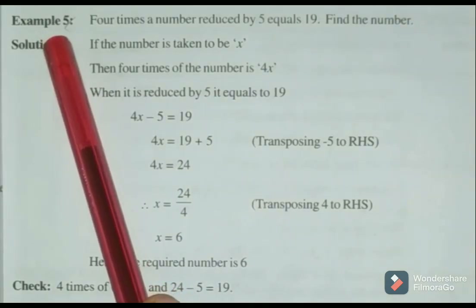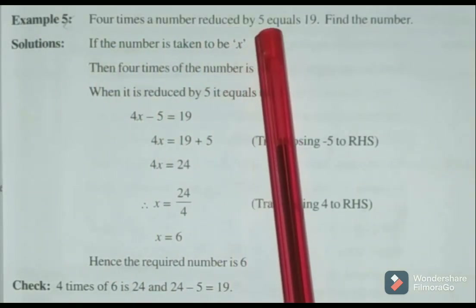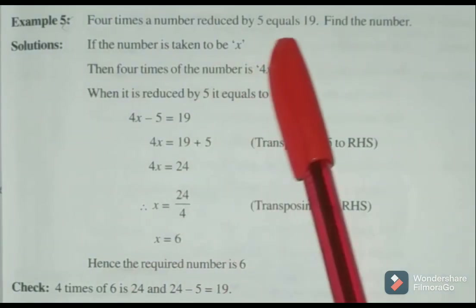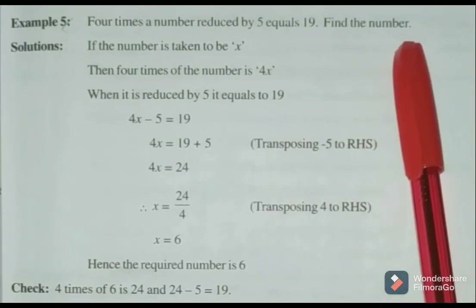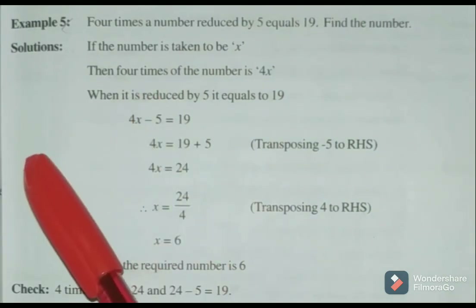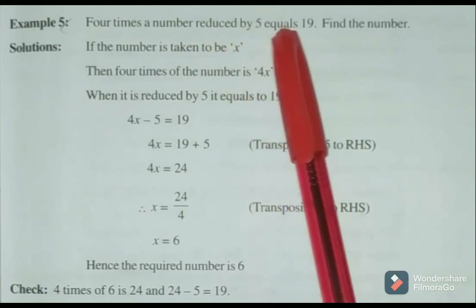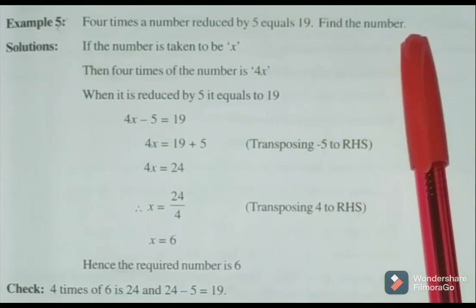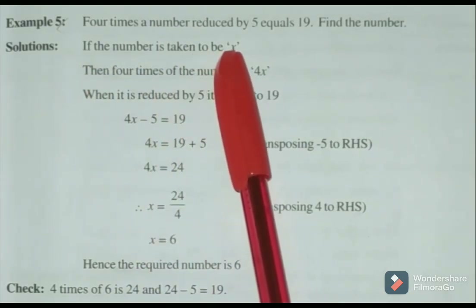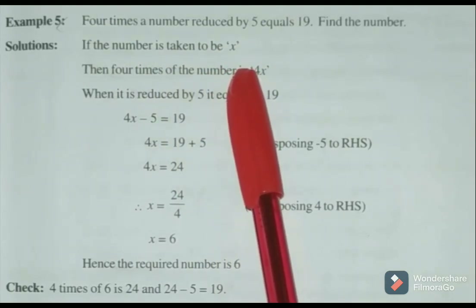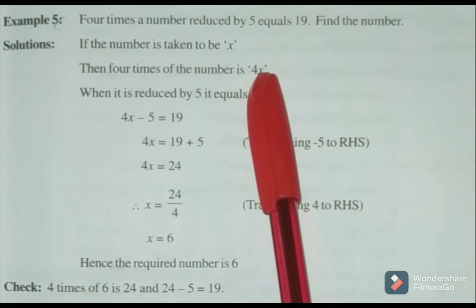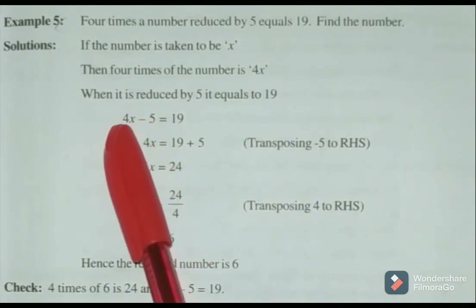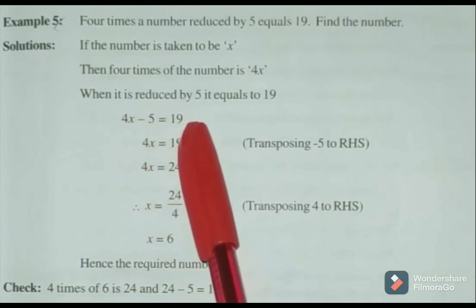Next example: 4 times a number reduced by 5 equals 19. Find the number. Let the number be X. 4 times the number is 4X. It is reduced by 5, and reduced means subtracted, so 4X minus 5 is equal to 19.